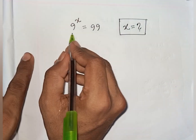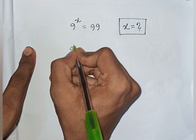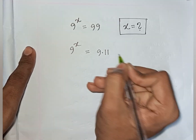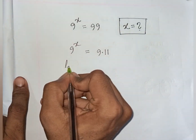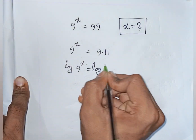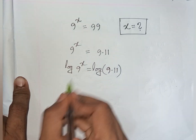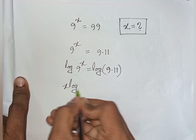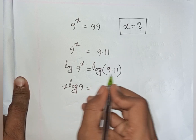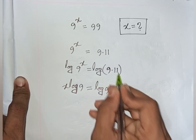How to solve 9^x = 99. Find the value of x. So 9^x = 99 = 9 × 11. We apply log to both sides: log(9^x) = log(9 × 11). The power x moves to the front: x × log 9 = log 9 + log 11.